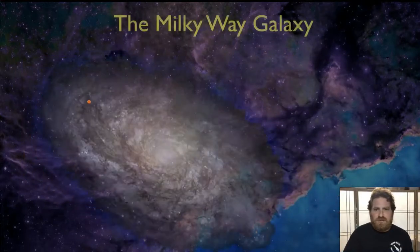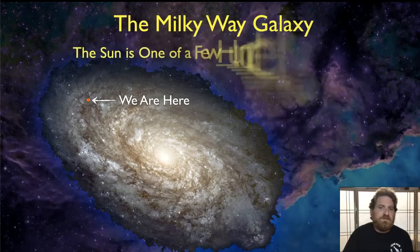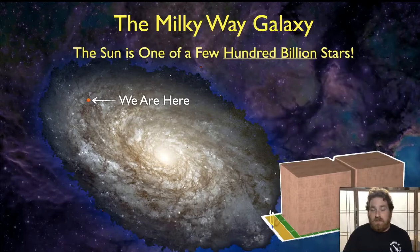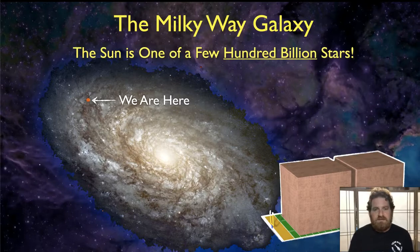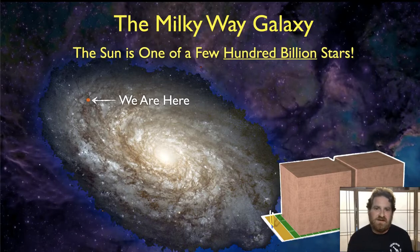If we now shrunk the sun down so that it became one of the hundreds of billions of stars that are in our Milky Way galaxy, such that we could build a scale model of the entire galaxy in that classroom, we would have to be able to fit 200 to 400 billion stars in that disc that fits within a classroom.